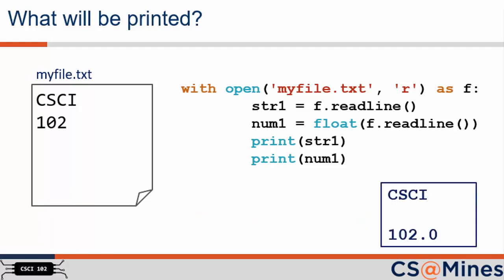Let's walk through this code together. First, the with statement will open the text file for reading with the alias f. Then, the first f.read line will assign the first line of the text file, which is CSEI, to str1. The second f.read line will assign the second line of the text file, which is 102, to num1. This assignment will occur after 102 is converted to a float. When printing both variables, Python will actually print an extra newline character because the str1 variable will contain CSEI and then a newline character.